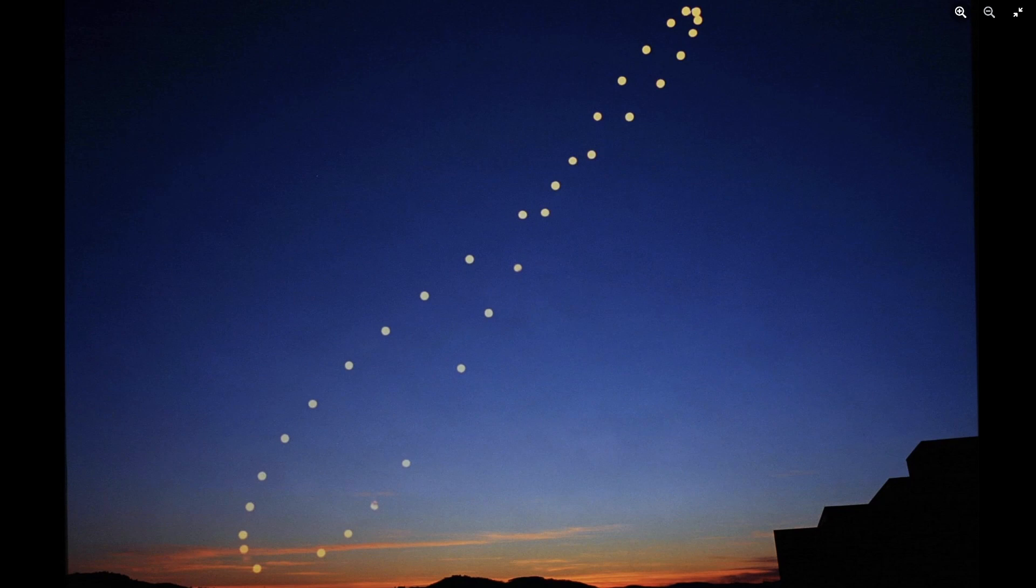Perhaps you're more used to seeing the equation of time in the form of what's called a solar analemma. This is the figure of 8 that is formed by the Sun if you take a photograph of the sky at the same time every day for a year.